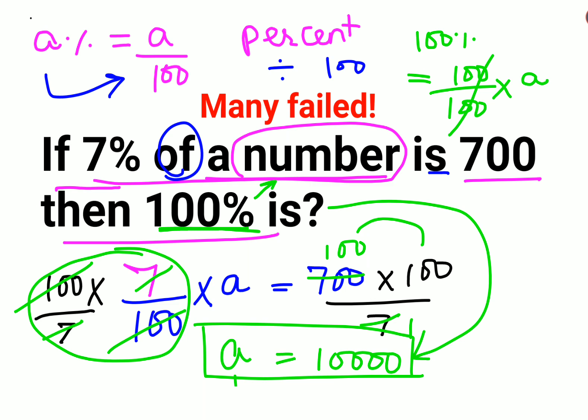Please understand, not only in this case, but whenever they ask you 100% of anything, it will be that number itself. Because in percentage, the max you go is 100. So 100% will always, when you convert into fraction, get you 100 upon 100, which equals 1.